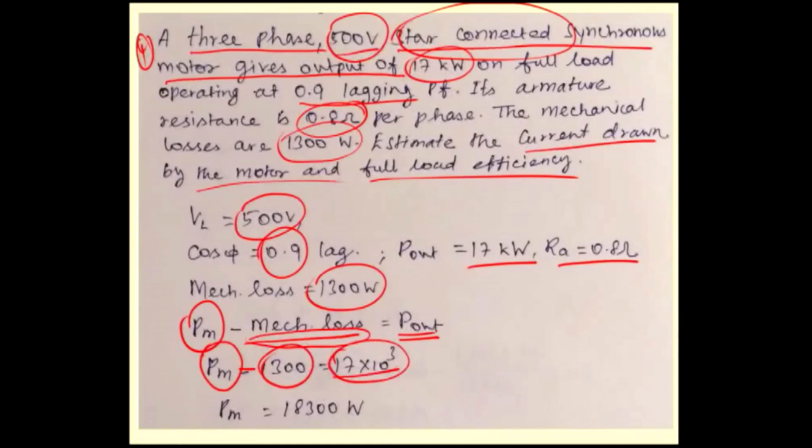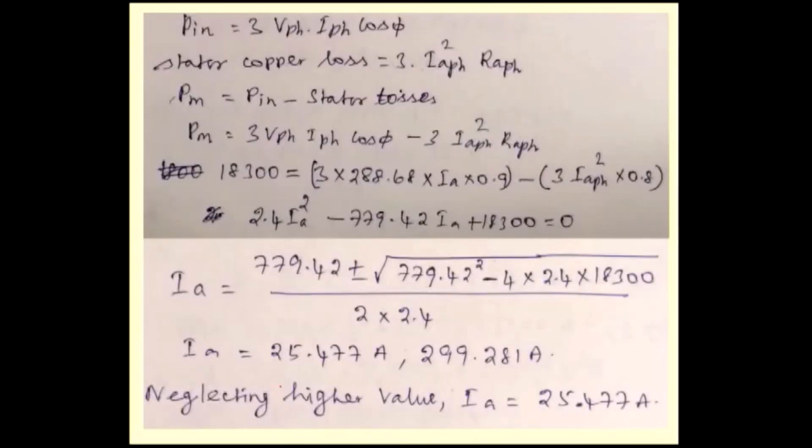Output power 17 kilowatt is given, mechanical loss is 1300 watts. So gross mechanical power developed Pm is 18300 watts.